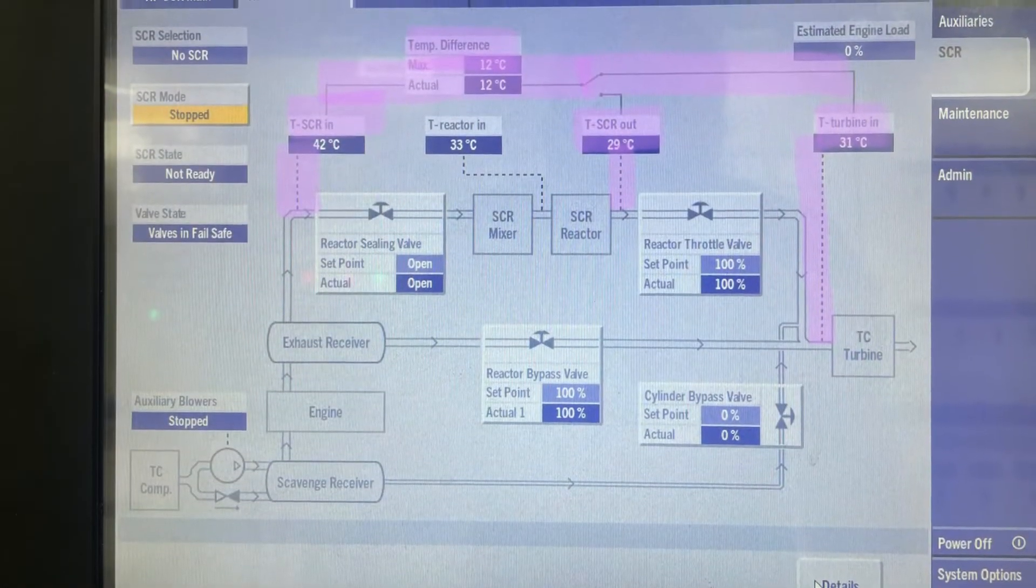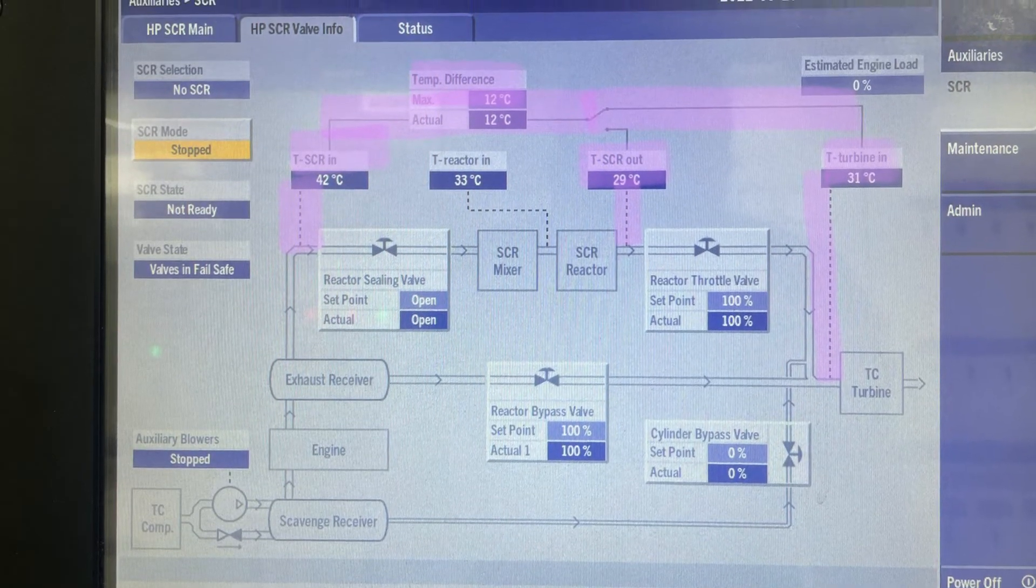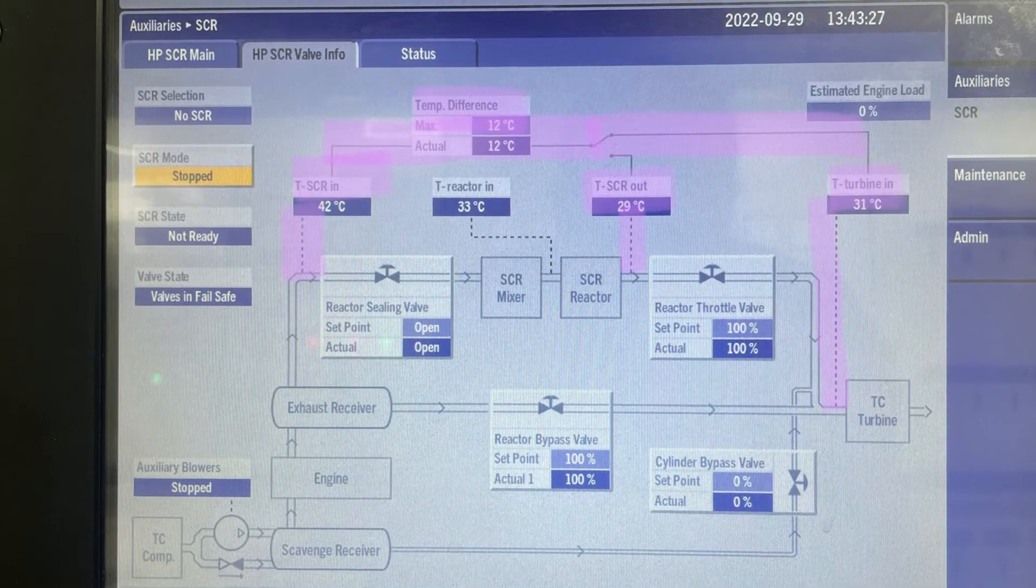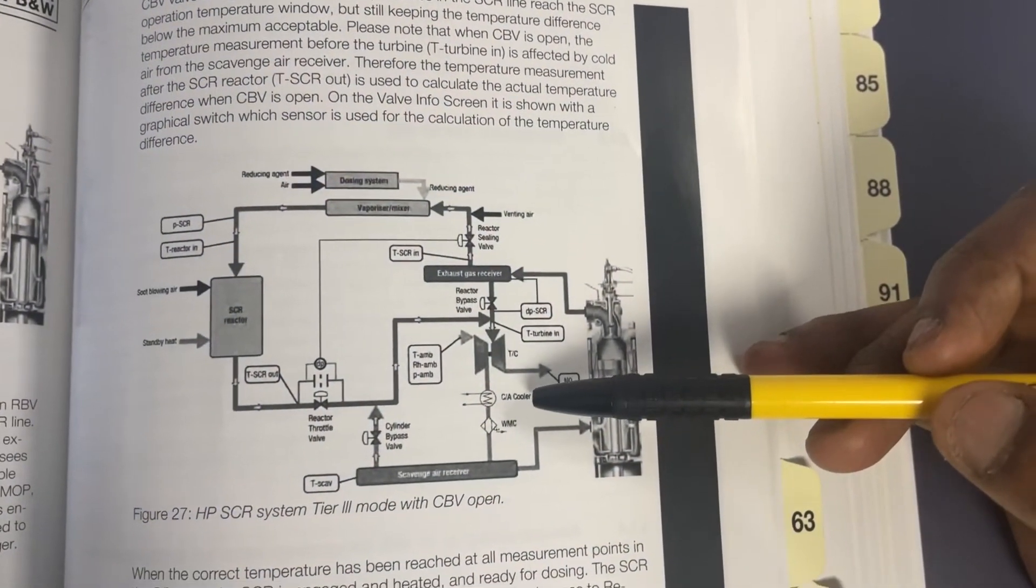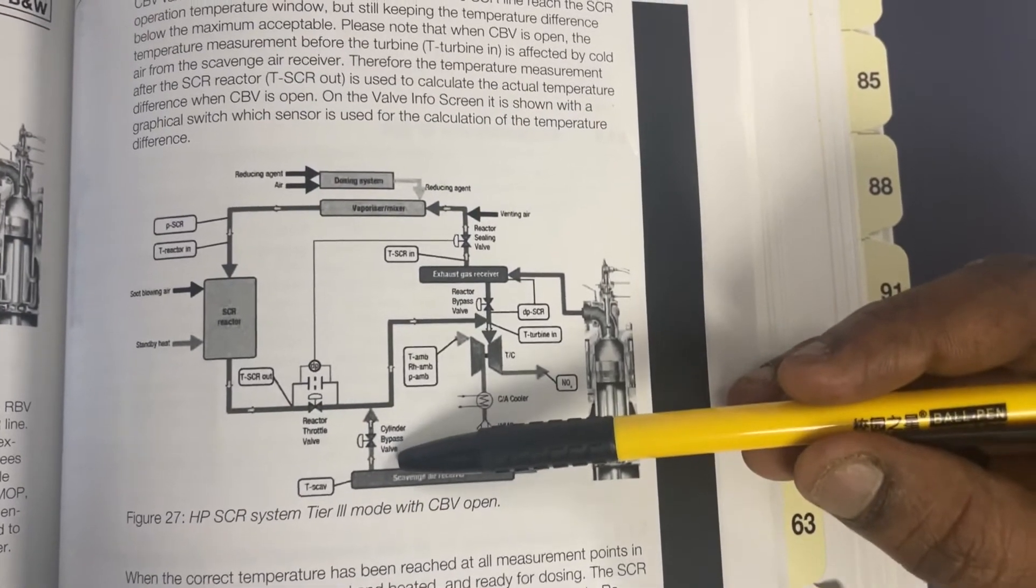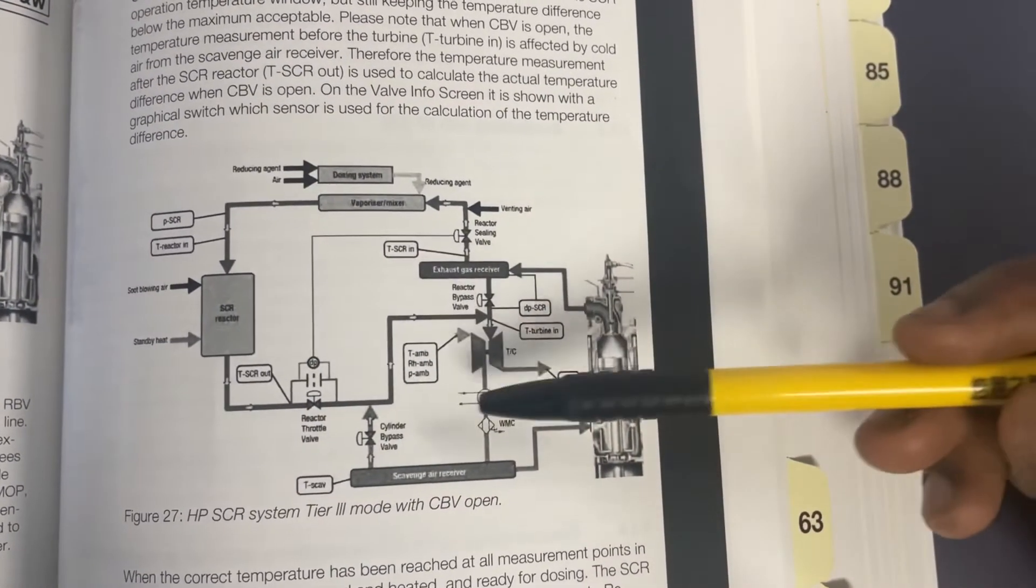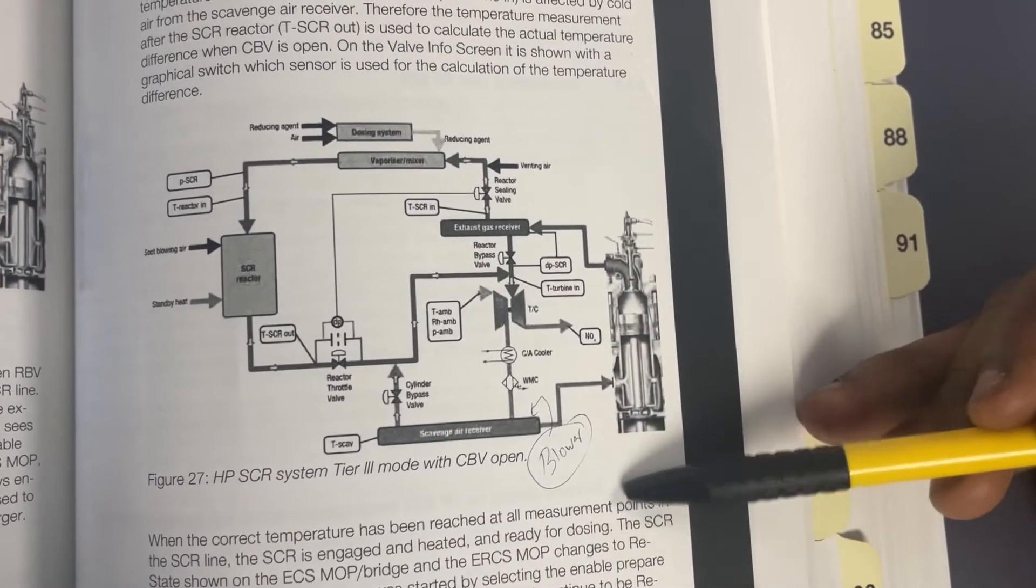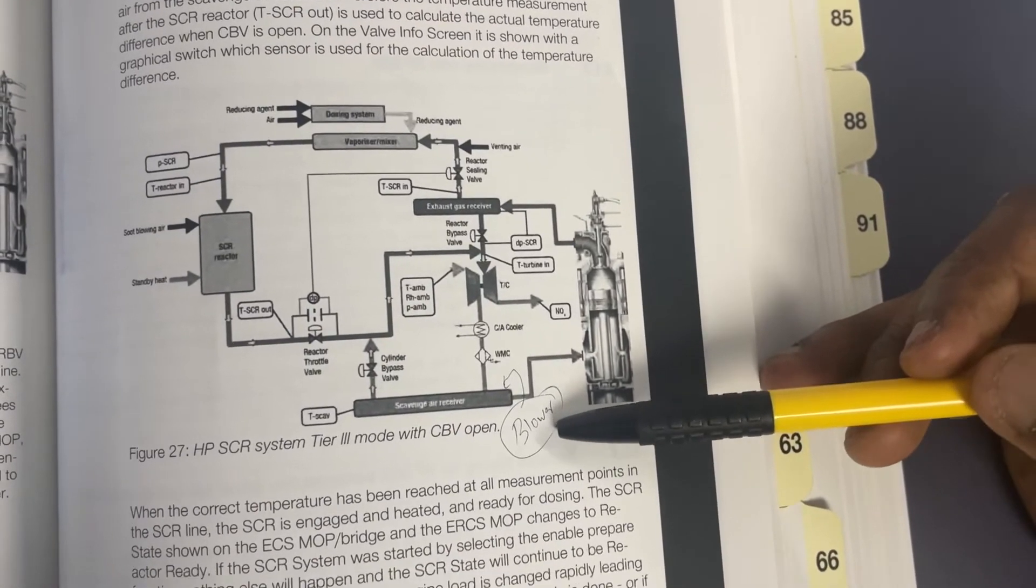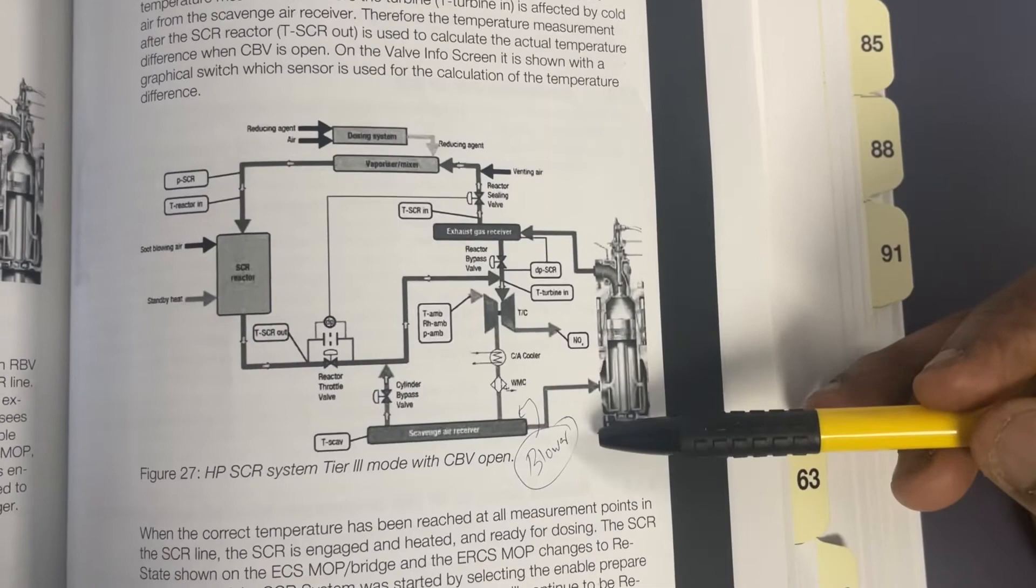Still keeping the temperature difference between the reactor inlet and turbine inlet never exceeds the predefined value. The second function of the CBV is to increase the temperature of the SCR reactor before stopping the auxiliary blower. At low load, the ECS keeps the blower running, but at a predefined engine load, the SCR control system will stop the auxiliary blower.